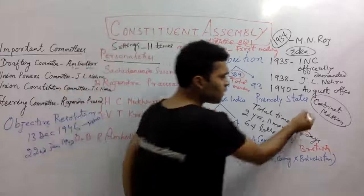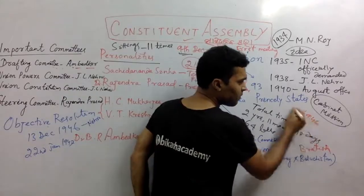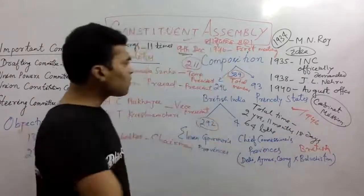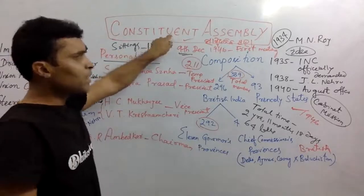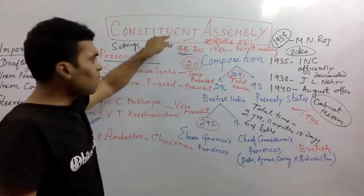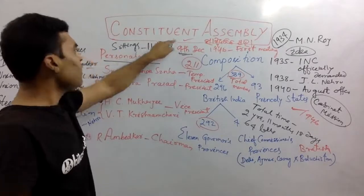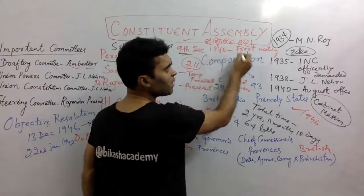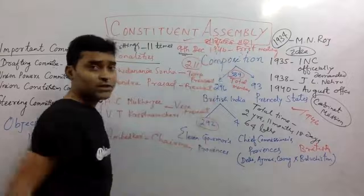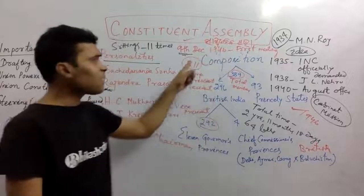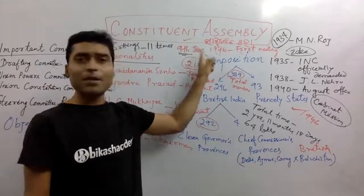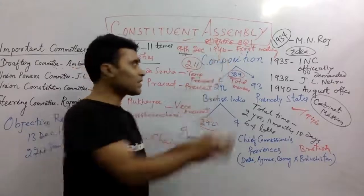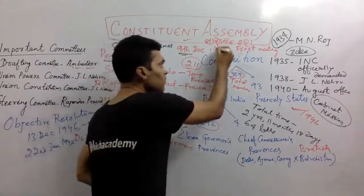In 1946, the Cabinet Mission Plan started. The first meeting was on 9th December 1946, and it was also noted as 18th December.